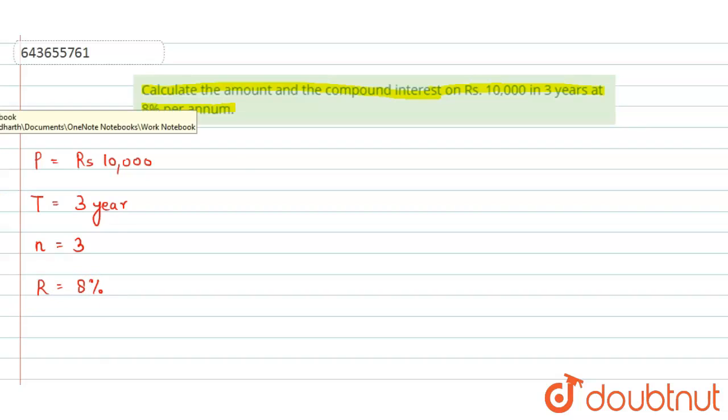Now let us apply the formula for amount. We know that Amount = P(1 + R/100)^n.